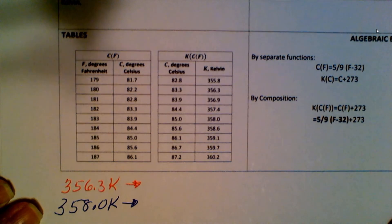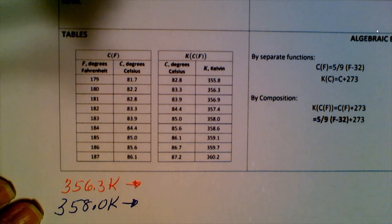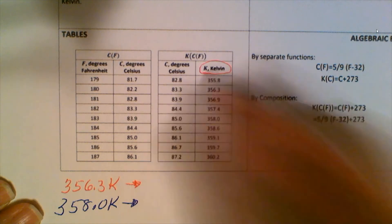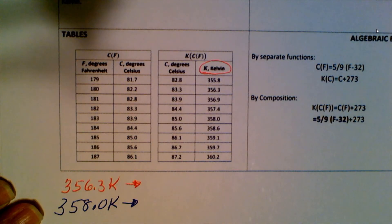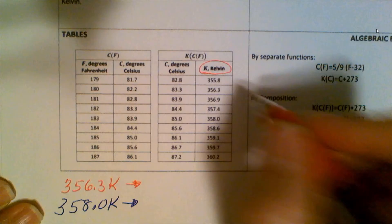We find the table that has Kelvin in it, and we find the value we're interested in, which is 356.3.